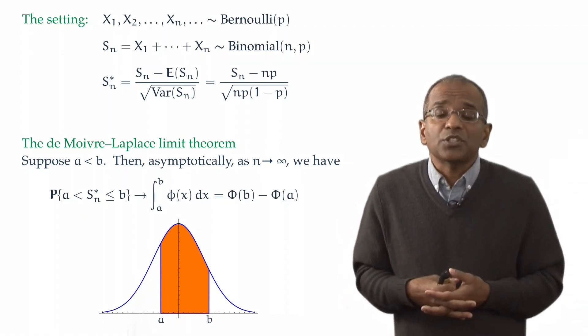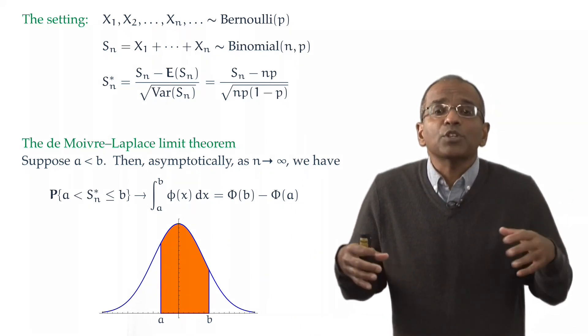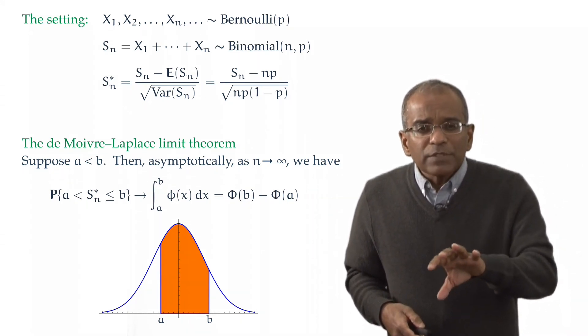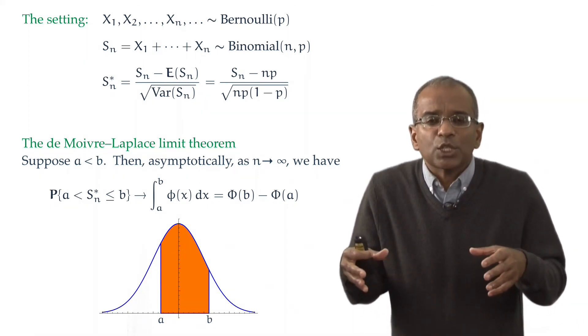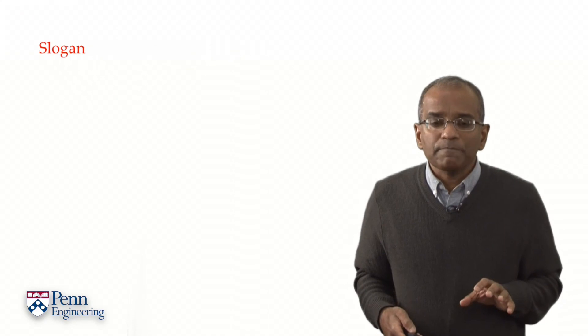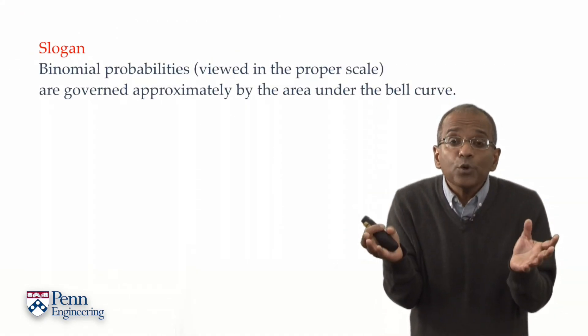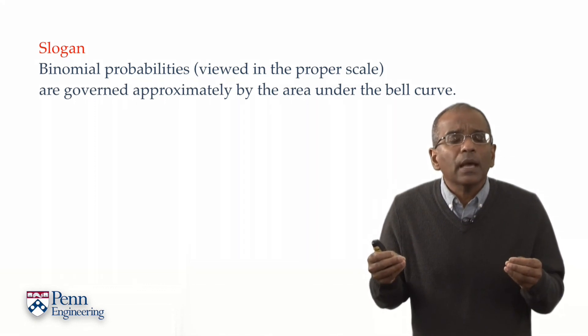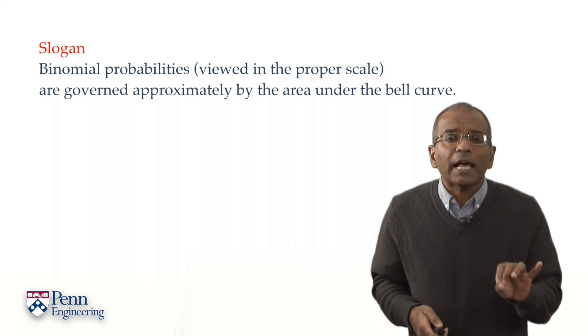Another rule of thumb is to say, well, if n times p or n times q is bigger than 5, then we should get good approximations. And indeed we do. Instead of delving deeper into the quality of approximation, which inevitably is going to get us into an algebraic morass, let us be satisfied with this slogan. To wit, that binomial probabilities, viewed in the proper scale and properly centered, are governed approximately by the area under a bell curve, even for modest values of n.